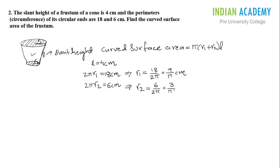We need to substitute these values in the formula. So we will get curved surface area, that is CSA, will be equal to π into r1, r1 is 9 divided by π, plus r2, r2 is 3 divided by π, into l, l is 4.